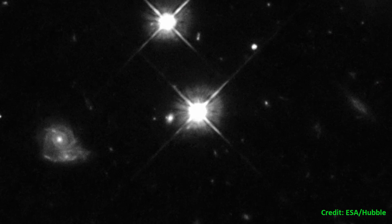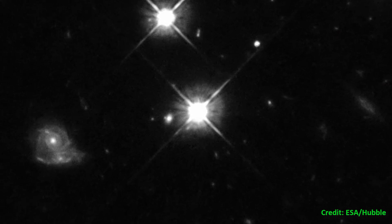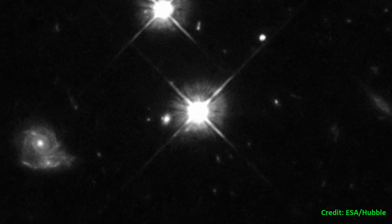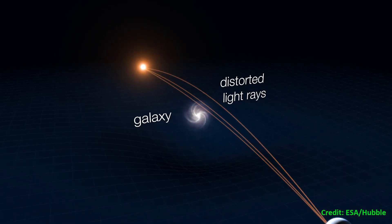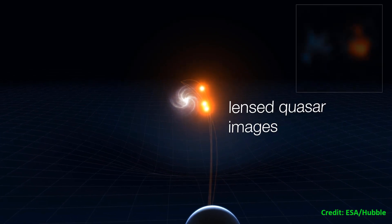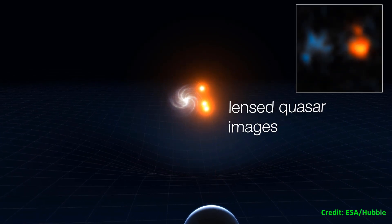In 1996, Hubble's 100,000th exposure was a quasar located 9 billion light-years from Earth. More recently, Hubble discovered the brightest quasar ever seen in the early universe.